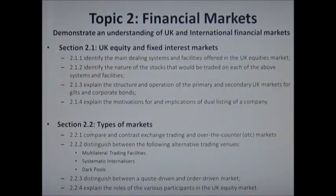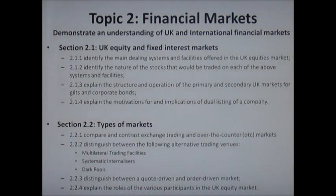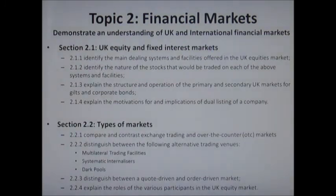Let us now look at gilts. The UK government bond market is commonly referred to as the gilt-edged or gilt market. Although the issued bonds carry a variety of names — Treasury, Exchequer, Consols, etc. — all bonds are the direct obligation of Her Majesty's government. The government agent issues gilts, which usually pay coupons semi-annually, to finance the public sector net cash requirement (PSNCR), which is the shortfall between government expenditure and government revenue. This used to be known as the public sector borrowing requirement (PSBR).